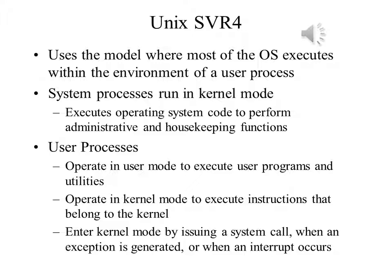UNIX uses two categories of processes: system processes and user processes. System processes run in kernel mode and execute operating system code to perform administrative and housekeeping functions, such as allocation of memory and process swapping. User processes operate in user mode to execute user programs and utilities, and in kernel mode to execute instructions that belong to the kernel. A user process enters kernel mode by issuing a system call, when an exception or fault is generated, or when an interrupt occurs.